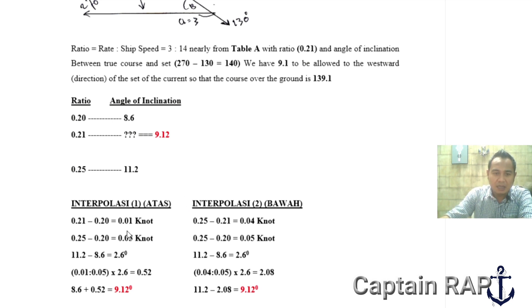Saya sukanya pakai yang interpolasi bawah ini, tapi saya akan jelaskan juga kedua cara interpolasi ini. Yang pertama interpolasi dari atas, kalau dari atas berarti selisih antara 0.20 dengan 0.21 dibagi 0.20 dan 0.25 dikali selisih antara 11.2 dengan 8.6. Jadi 0.21 kurang 0.20 itu 0.01, 0.25 kurang 0.20 itu 0.05, selisih antara 11.2 kurang 8.6 itu 2.6. Jadi 0.01 dibagi 0.05 dikali 2.6 hasilnya 0.52 derajat. Karena kita mengambil interpolasi dari atas, maka nanti hasil ini teman-teman tambahkan dari 8.6. Jadi 8.6 ditambah 0.52 itu hasilnya 9.12 derajat.